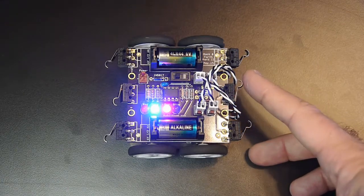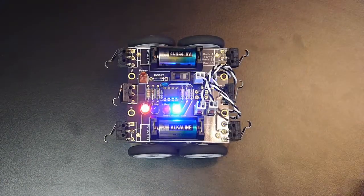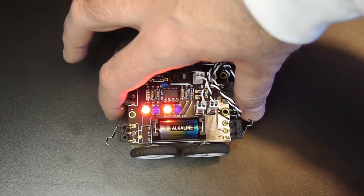When it runs into an obstacle in the back, it switches back again. What happens if they're both pressed? It stops.